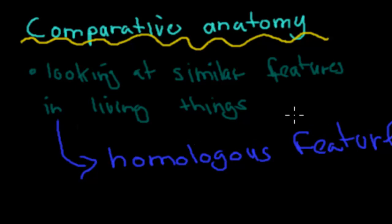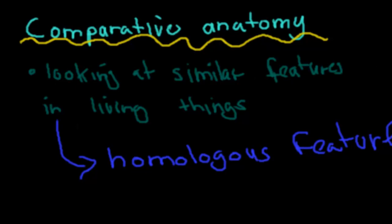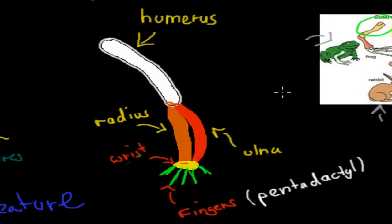So if you look at arms from mammals, for example, and you find that they're quite similar, that would be a homologous feature. We will look at different mammals, but first we want to go over what a normal arm looks like. A human arm looks like this.